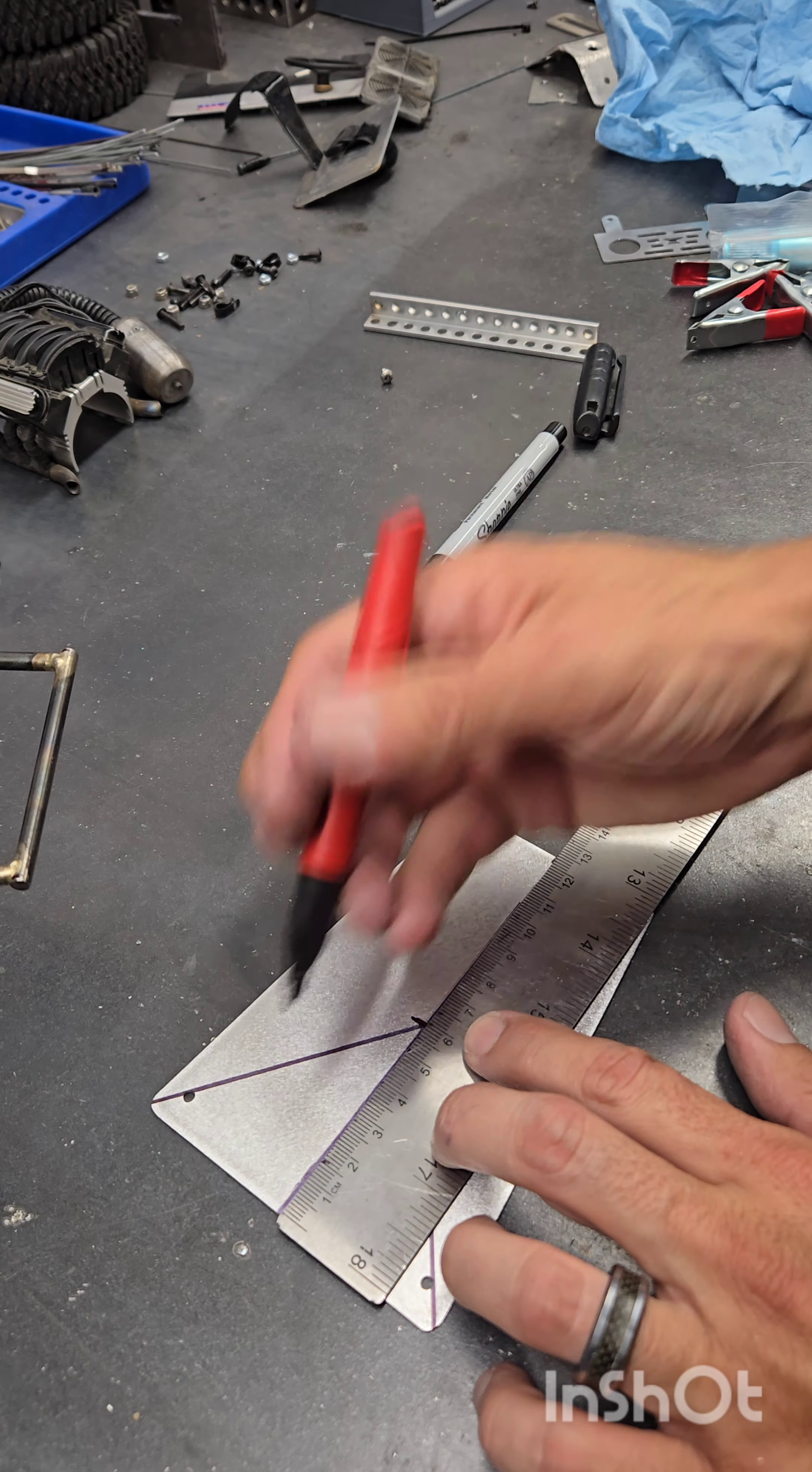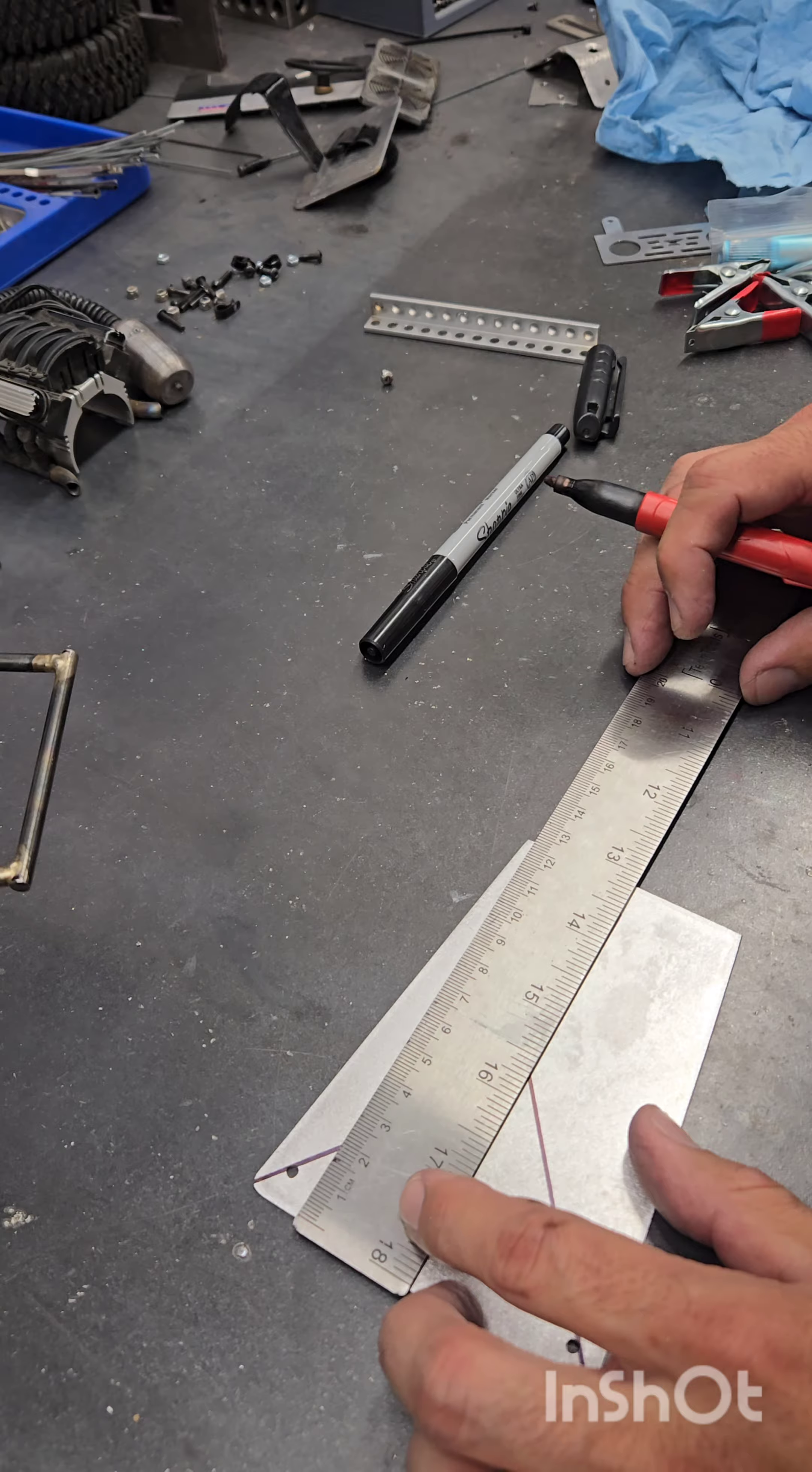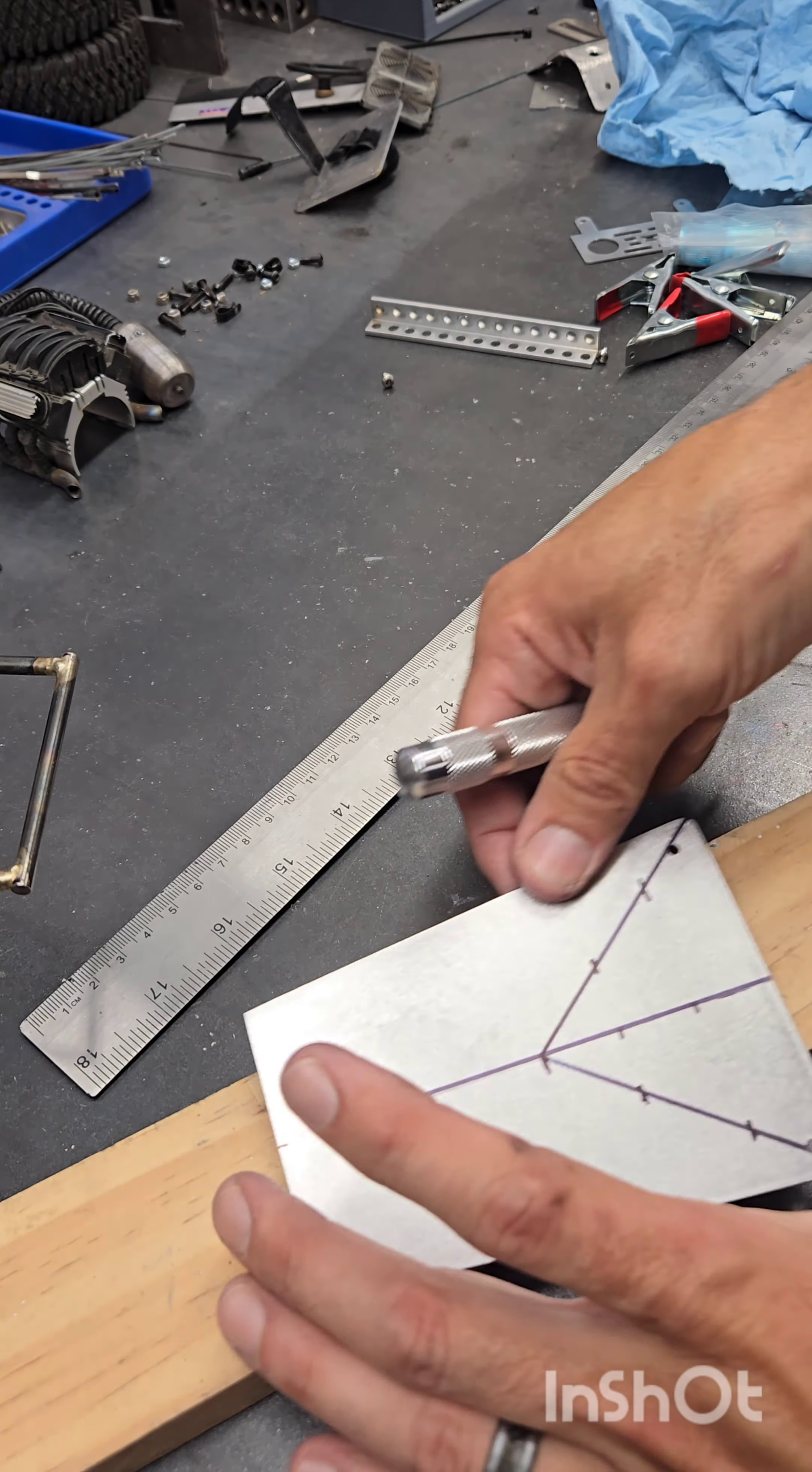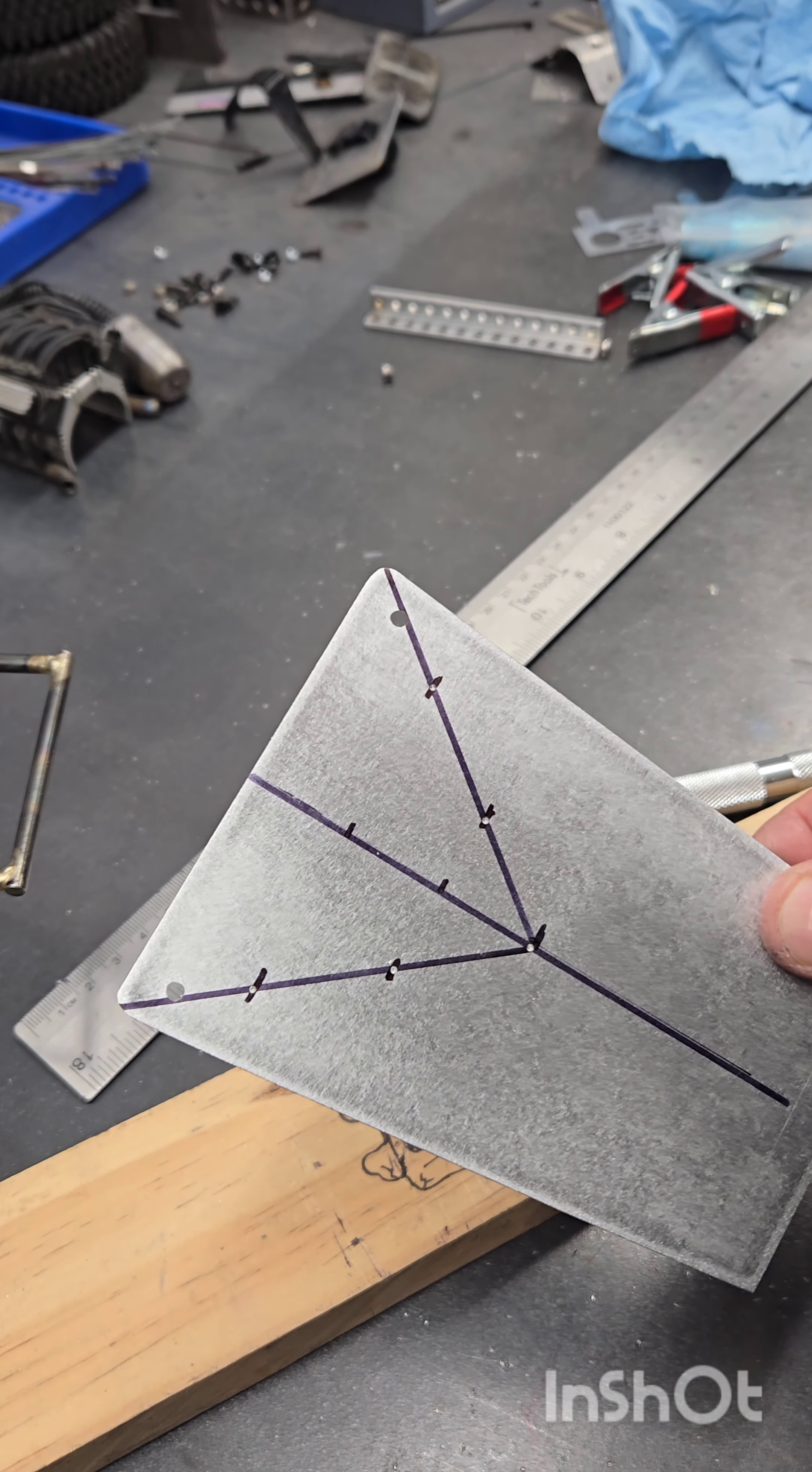Not a whole lot of rhyme or reason to the hole spacing here, just made marks that were appealing to my eye. These happen to be 20mm apart, and then we go ahead and mark it for center punching. After you get center punched, hit it with some 3/16 holes and ready for dimple die.